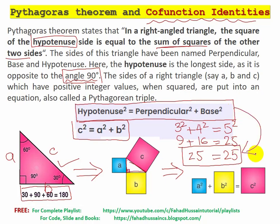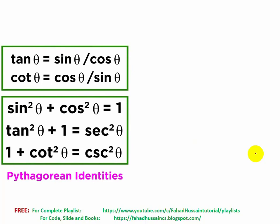By using the Pythagorean theorem, we can identify sine theta, cos theta, and tan theta values using Pythagorean identities. If we know the Pythagorean theorem, we can find two sides of the right-angle triangle. In this Pythagorean framework, there are some identities to prove.